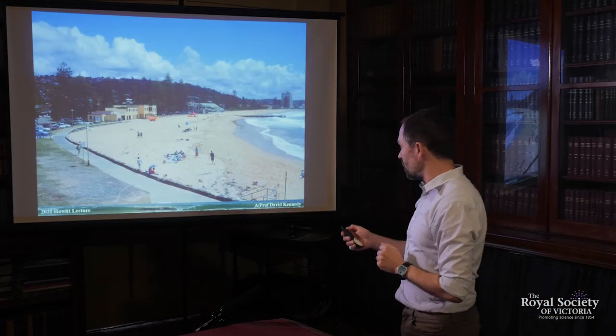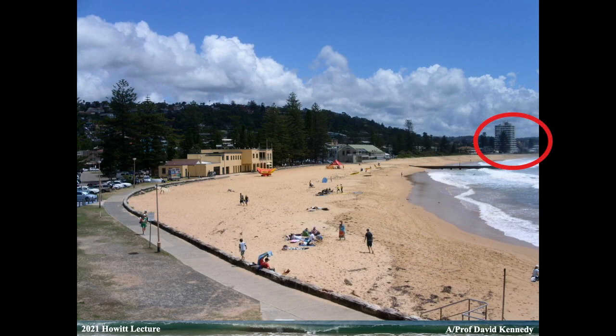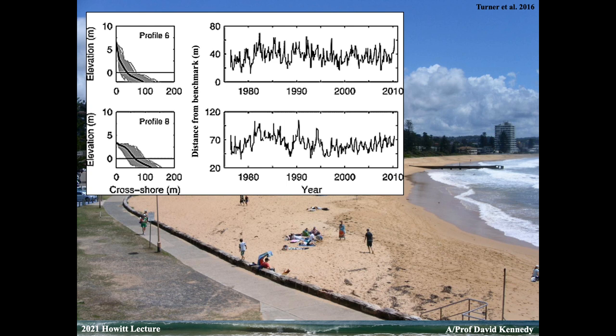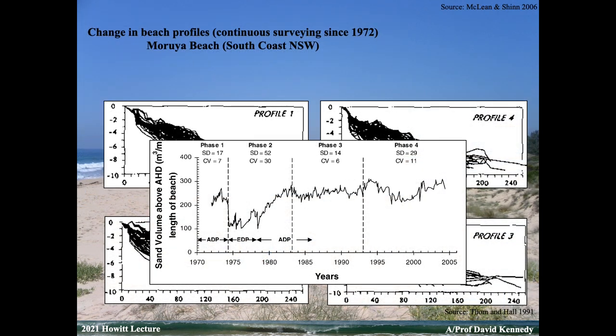Returning to Collaroy North Narrabeen — the houses along the back of that seawall were actually resumed by council in the 1930s and 40s when the same event happened previously. Collaroy has a nice long-term record, monitored in incredible detail by the Water Research Laboratory at UNSW. We're seeing a similar pattern: ups and downs with storm events from the 1980s to 2010, storm events eroding then rebuilding. Missing the 1974 storms because surveys hadn't started yet.